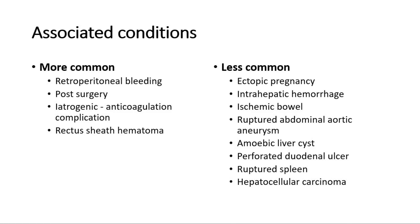Other less common conditions include ectopic pregnancy, intrahepatic hemorrhage, ischemic bowel, ruptured abdominal aortic aneurysm, amoebic liver cyst, perforated duodenal ulcer, ruptured spleen, and hepatocellular carcinoma.